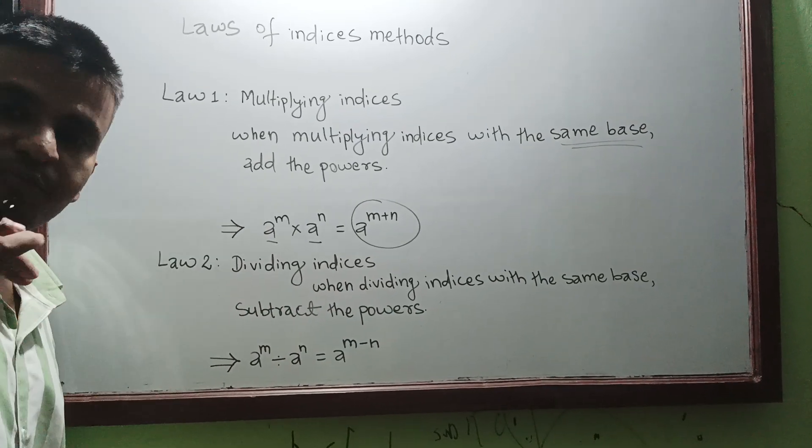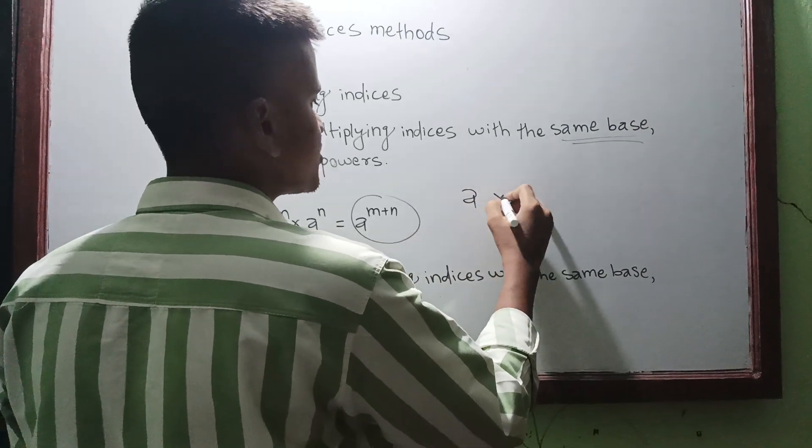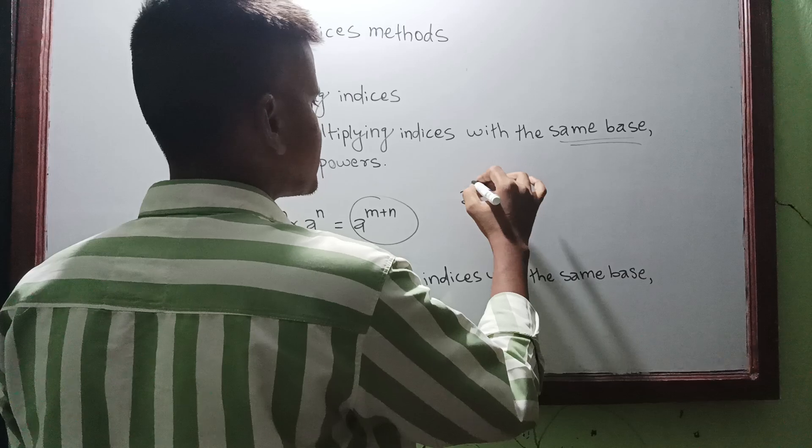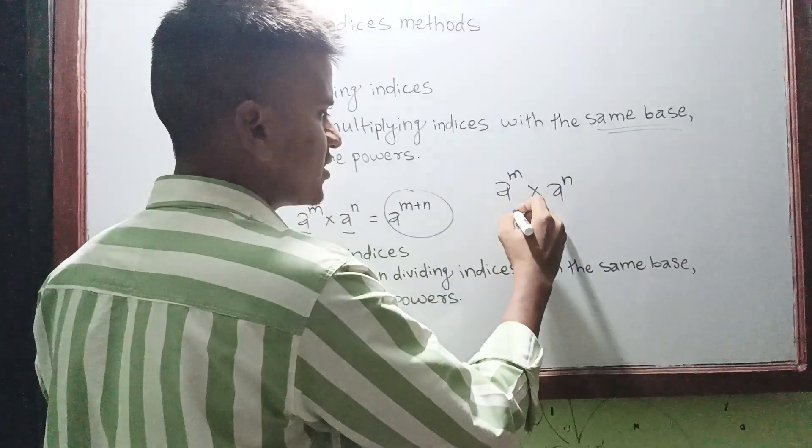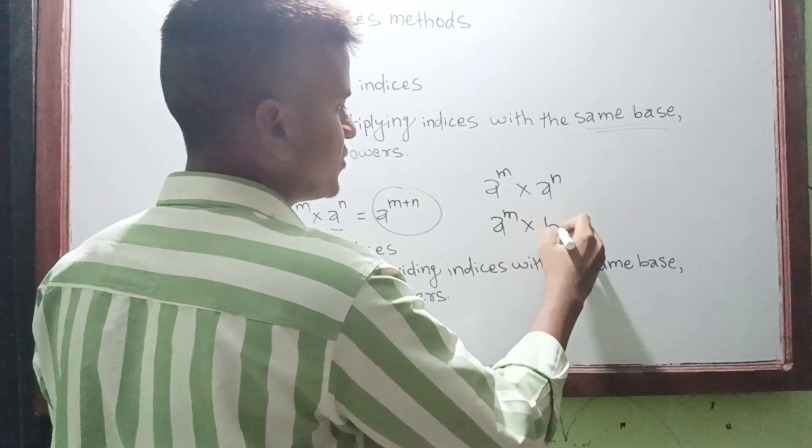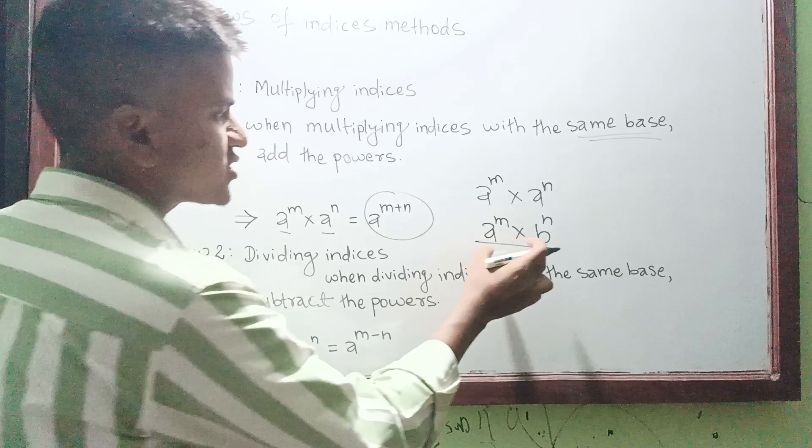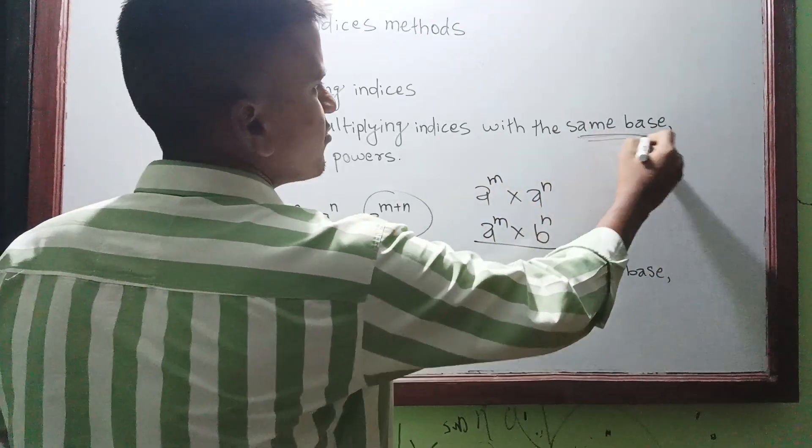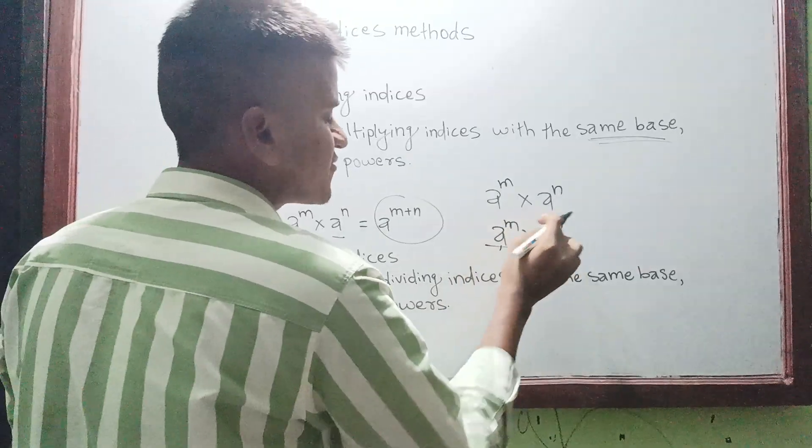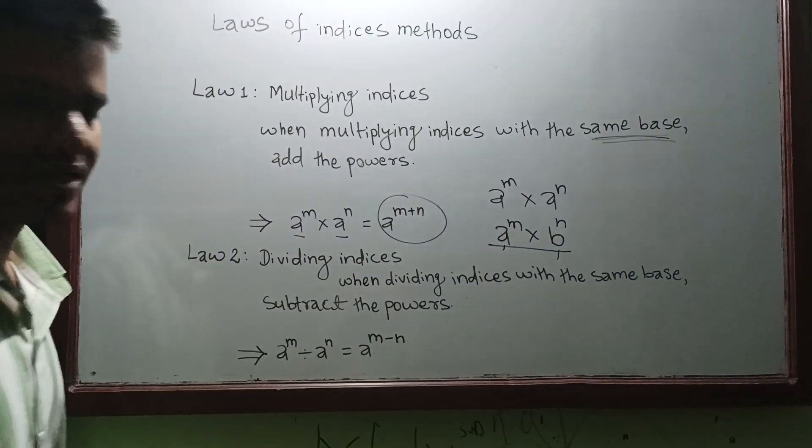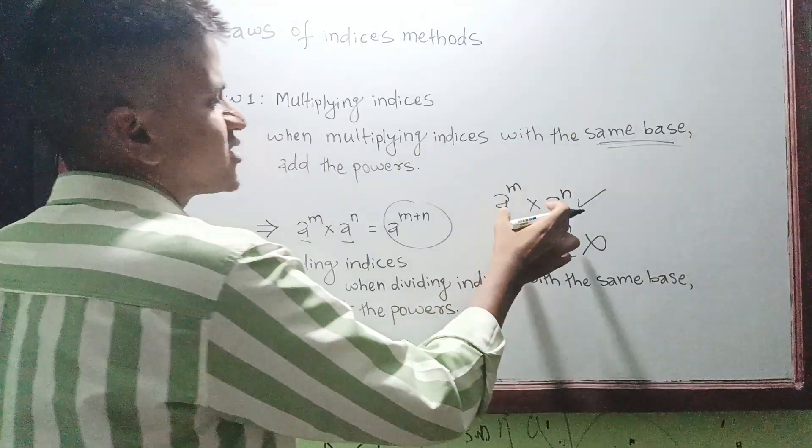See, if it is 'a' here and 'a' here, with m and n. But what if here will be like a to the power m into b to the power m? Can we do this? No, we can't because the bases are not same - it is 'a' here and 'b' here, and it is different. That is why the bases should be same - that is the condition.